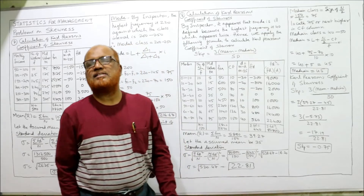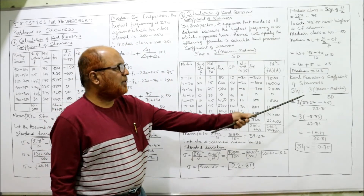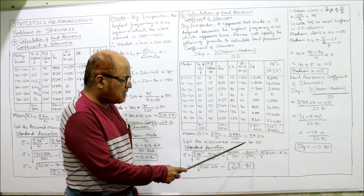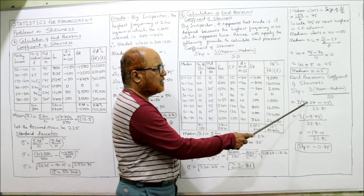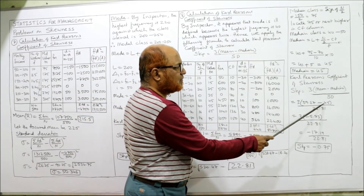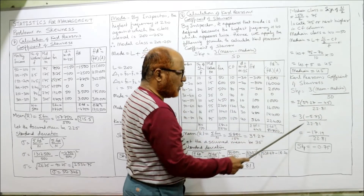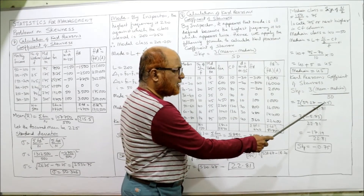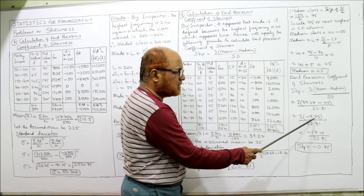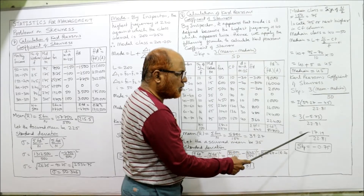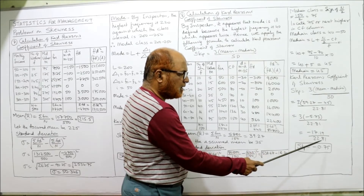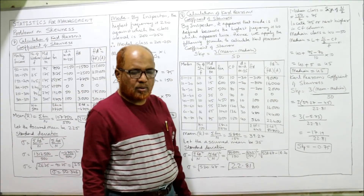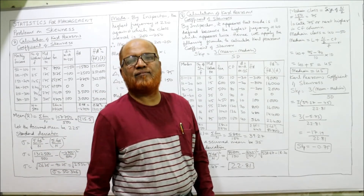Carl Pearson's coefficient of skewness: SKP = 3 × (Mean − Median) / σ = 3 × (39.27 − 45) / 22.81 = 3 × (−5.73) / 22.81 = −17.19 / 22.81 ≈ −0.0785.